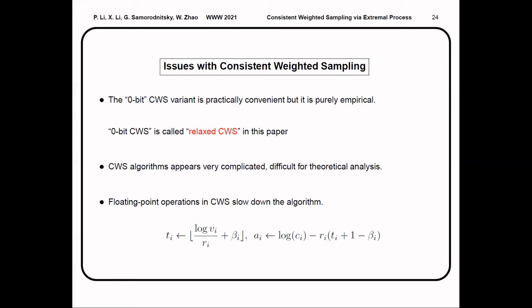Despite that we have made great effort to make CWS practical, it still has some issues that can be further improved. Firstly, the 0-bit CWS variant is practically very convenient but is only purely empirical. Secondly, the CWS algorithm appears very complicated, so it is very difficult for theoretical analysis. Lastly, the floating-point operations in CWS slows down the algorithm. Recall that in CWS we will need to do some floor division and logarithm operations.